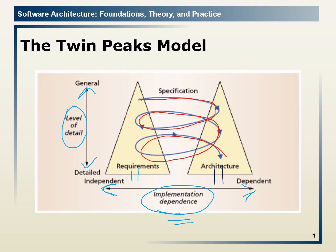If we want to actually describe the Twin Peaks model, we can describe it in 3 to 4 points. The first point is that the Twin Peaks model is the link between requirements and architecture. The second point is that when the abstraction level of the requirement specification is high, the abstraction level of the corresponding architecture would also be high.